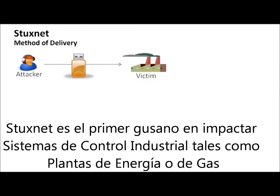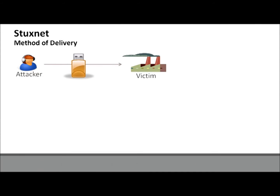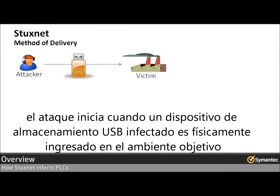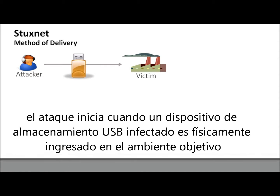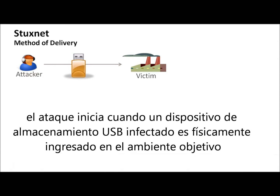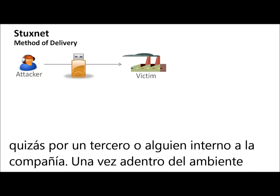Stuxnet is the first worm to target an industrial control system, such as a gas pipeline or a power plant. The attack likely started when an infected USB key was physically brought into the target environment, perhaps by an unknowing third-party contractor or by an insider. Once inside the environment,